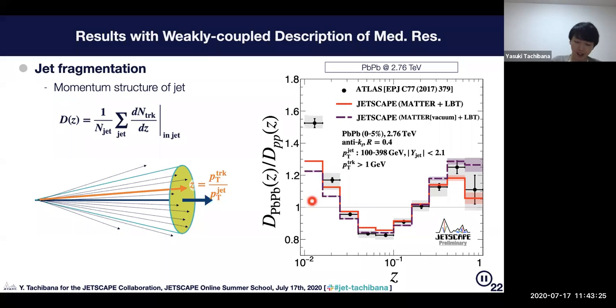Small z corresponds to small PT particles inside the jet and large z to large PT particles inside the jet.